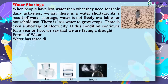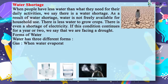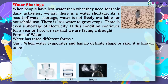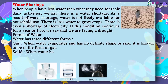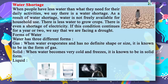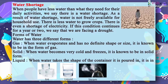Forms of water. Water has three different forms. Gas: when water evaporates and has no definite shape or size, it is known to be in the form of gas. Solid: when water becomes very cold and freezes, it is known to be in solid form. Liquid: when water takes the shape of the container it is poured in, it is in liquid form.